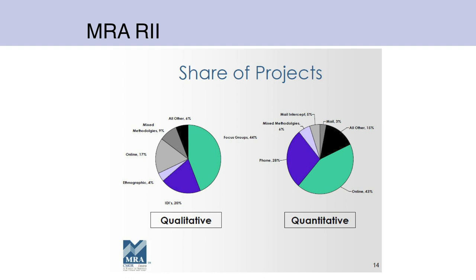Here are two pie charts. If we look at online on the right, it's green. If we go to green on the left, it's something different, and online is gray. So if you look at one of the labels and say 'green means...' — it doesn't mean that on the other chart.